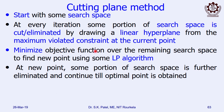Identify which constraint is getting violated to the maximum extent — find the values of all the constraints, and wherever the maximum negative value exists for the g function, that is the maximum violated constraint. After removing some portion via the cutting plane, minimize the objective function over the remaining search space. Since it has already been linearized, you can use any linear programming algorithm. You get a new point, and from that point, again some portion of the search space is further eliminated and you continue until the optimal point is obtained.